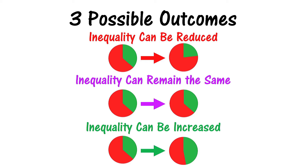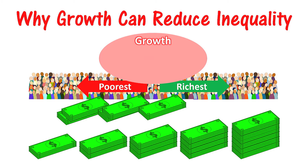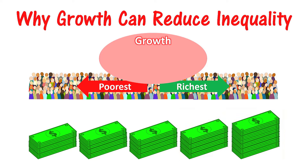The first possible result of economic growth is that growth can reduce inequality if the growth disproportionately goes to people at the bottom. As the example on the screen shows, the richest people can maintain their amount of income and/or wealth while the people below see their share increase.